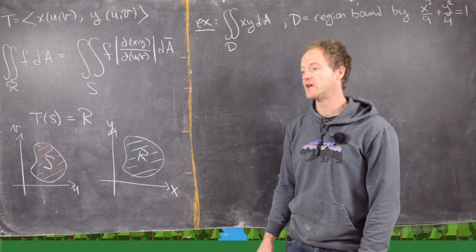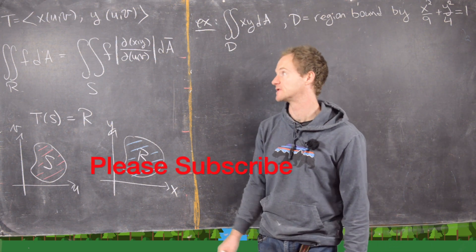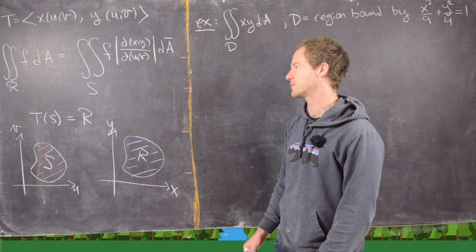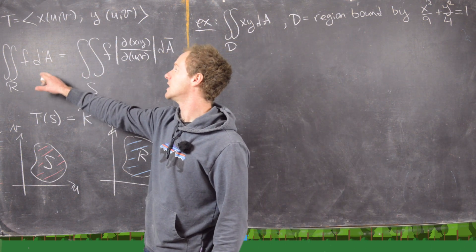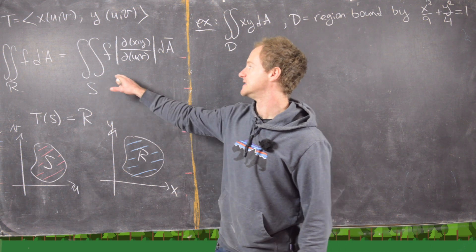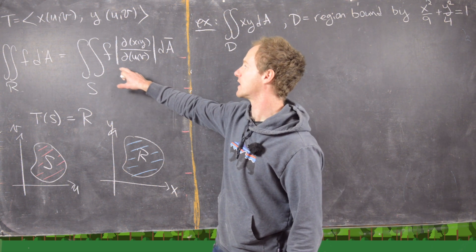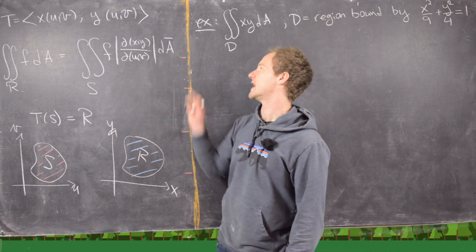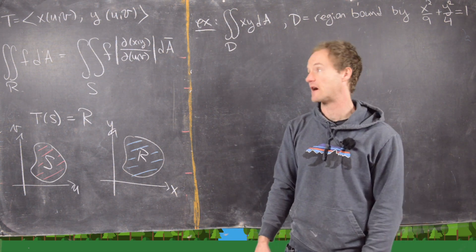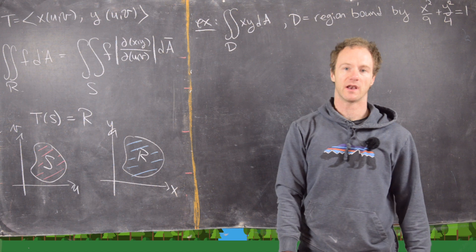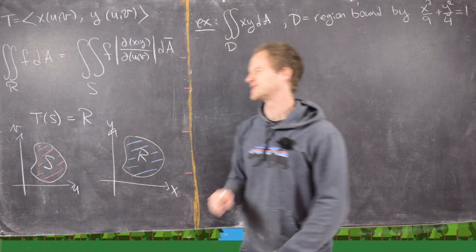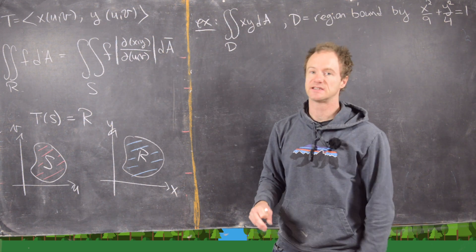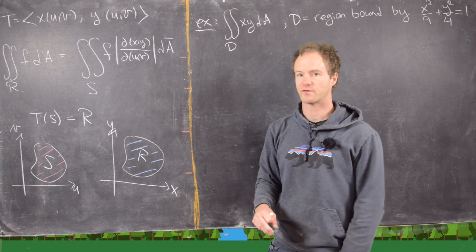In this video we're going to do a couple of examples of changing variables for double integrals. Recall we've got T, a one-to-one transformation of the plane, then the double integral over R in the xy plane is equal to the double integral over S in the uv plane of the function multiplied by the Jacobian, which we denote by d(xy)/d(uv). Here we have dA, which is like a dx dy element, and dA-bar, which is like a du dv element, done in whichever order is most appropriate.